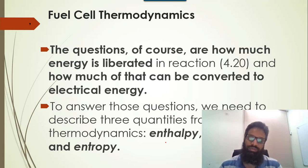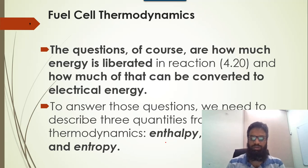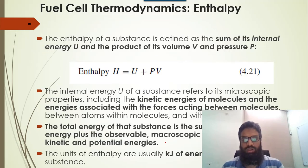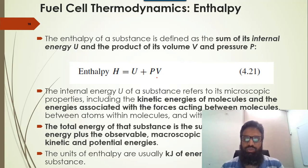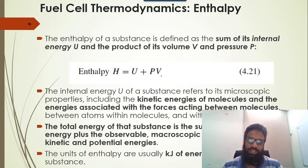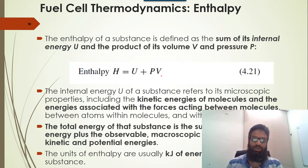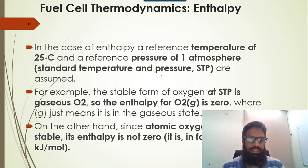There are three types of energy to understand: enthalpy, free energy, and entropy. Enthalpy is the sum of internal energy and the product of pressure and volume: H = U + PV. It includes the kinetic energy of molecules and energy associated with forces acting between molecules. Its unit is kilojoule per mole. At standard temperature (25°C) and pressure (1 atm), the enthalpy of stable O₂ gas is zero, while atomic oxygen O has enthalpy of 247.5 kJ/mol.